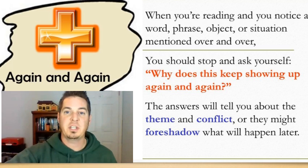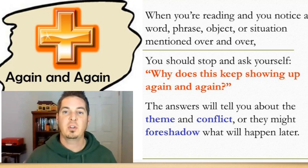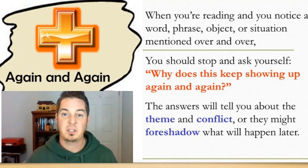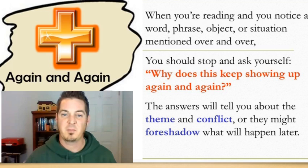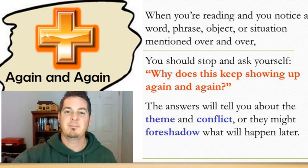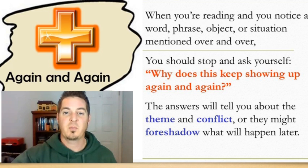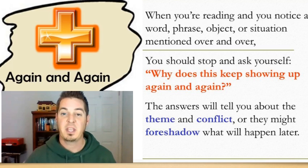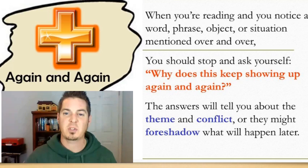So while you're reading, if you notice a word, a phrase, an object, or a situation that the author deliberately mentions over and over, you have to stop and think. Ask yourself: why does this keep coming up? The answers will tell you about the theme or the lesson that could be learned and the conflict that might be going on with our character.